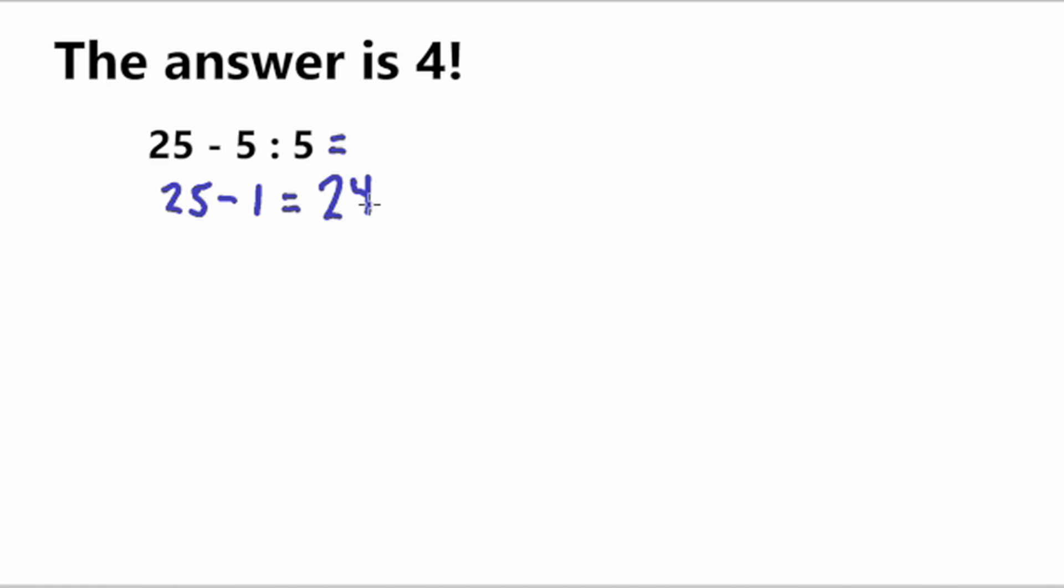However, in the statement here it says that the answer is 4. So how did they get that answer? That's kind of weird because we did it correctly and we got 24. So how would they get 4? Maybe the way they got 4 is that they did not follow the order of operations, which is wrong.